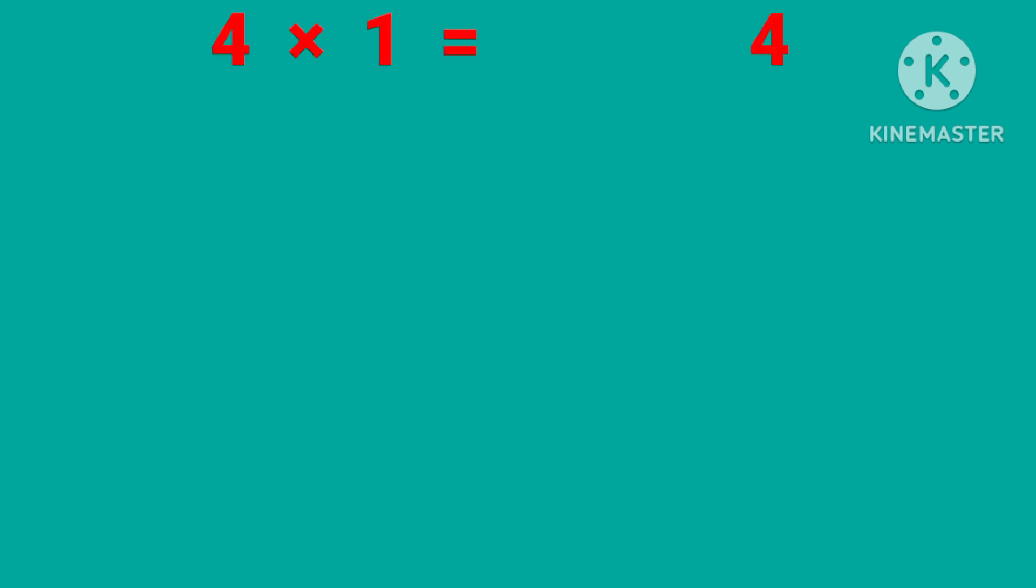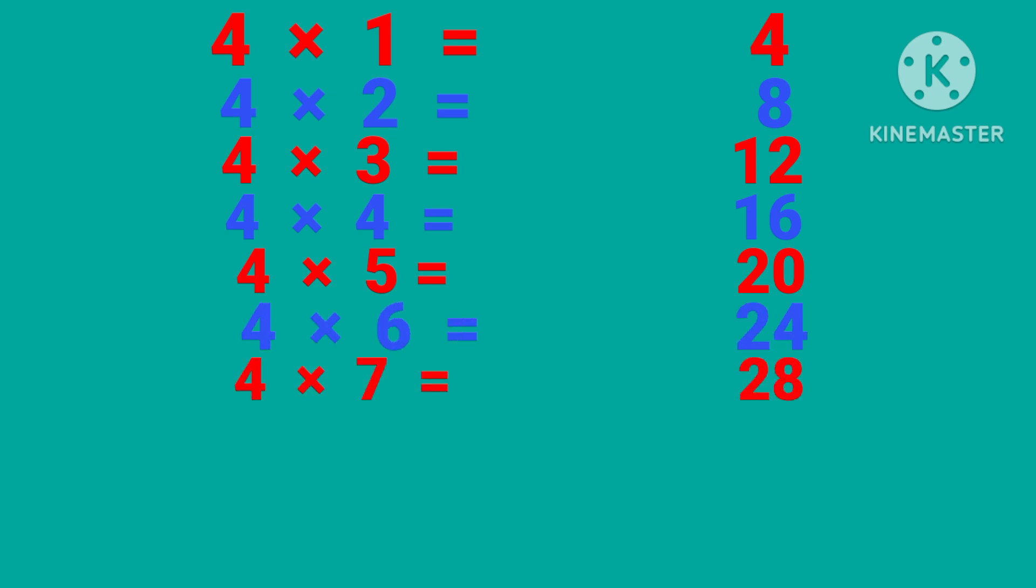4 times 1 is 4, 4 times 2 is 8, 4 times 3 is 12, 4 times 4 is 16, 4 times 5 is 20, 4 times 6 is 24, 4 times 7 is 28, 4 times 8 is 32, 4 times 9 is 36, 4 times 10 is 40.